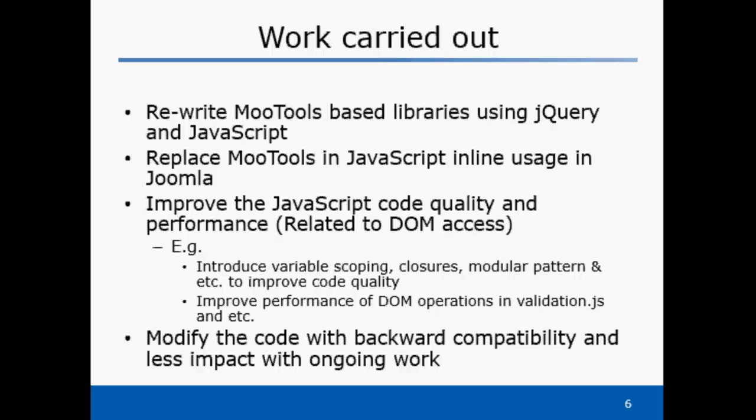This had to be done while keeping backward compatibility in consideration, to support extensions and possible ongoing work, which was a major challenge. Out of this project scope, most of these libraries were rewritten improving code quality and fixing performance bottlenecks. A very good example is the performance improvement in validation.js to support thousands of input validations without freezing the user interface, using jQuery with improved caching and faster queries.